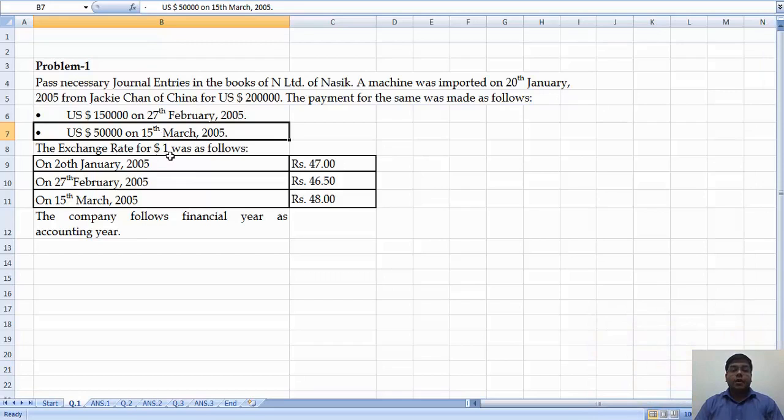The exchange rate for one dollar was as follows: when we imported on that day, that is, on 28th January 2005, the rate was Rs 47.